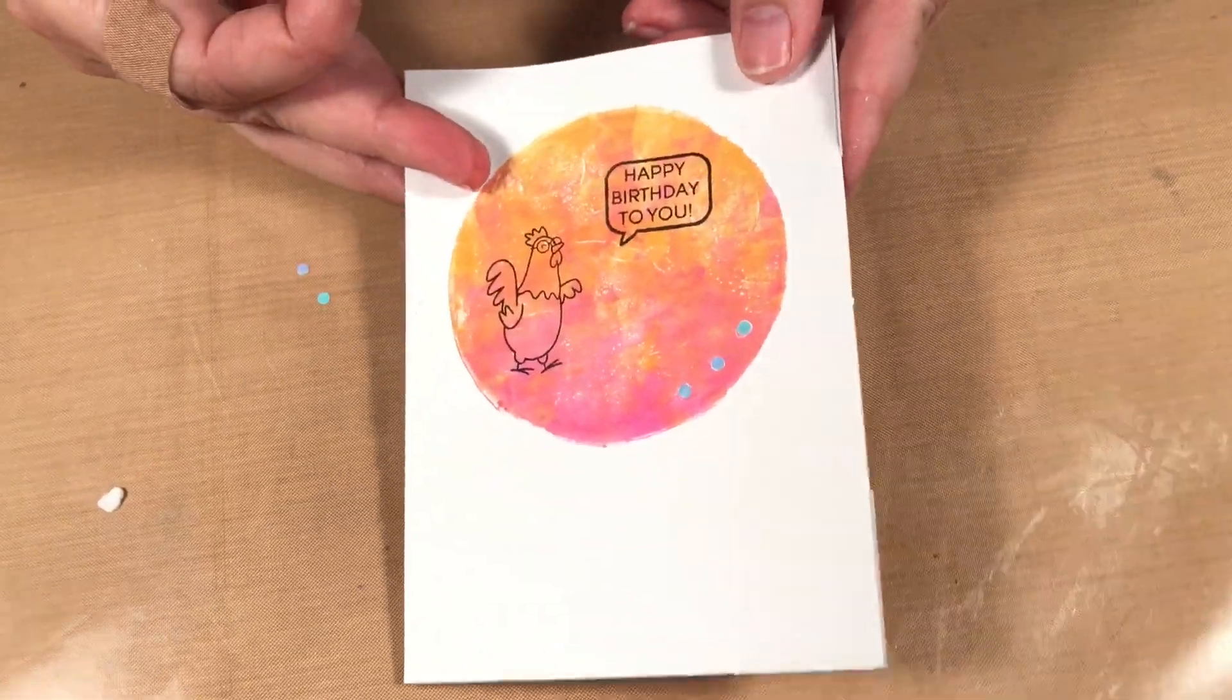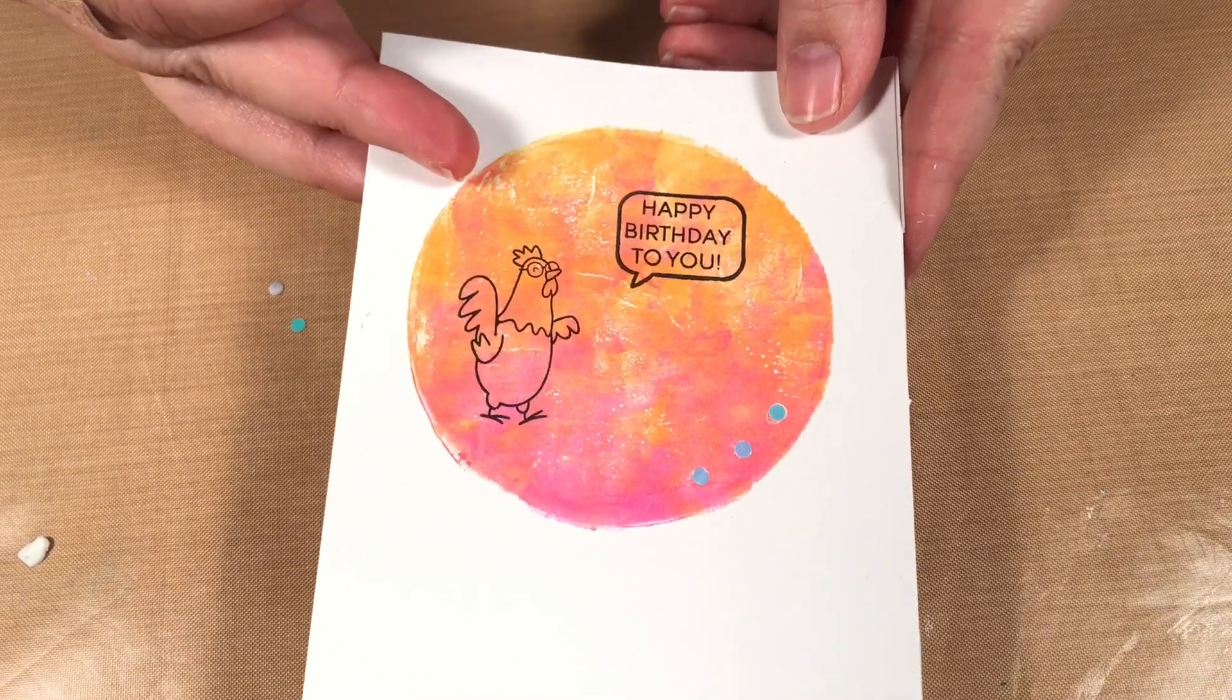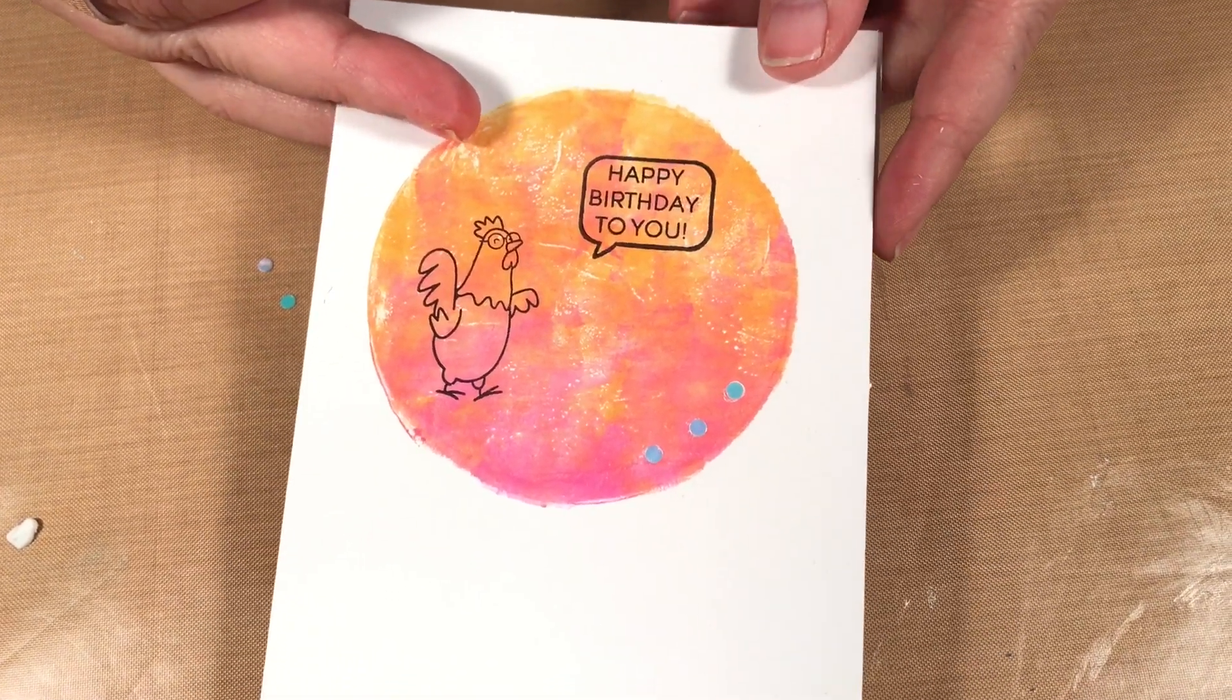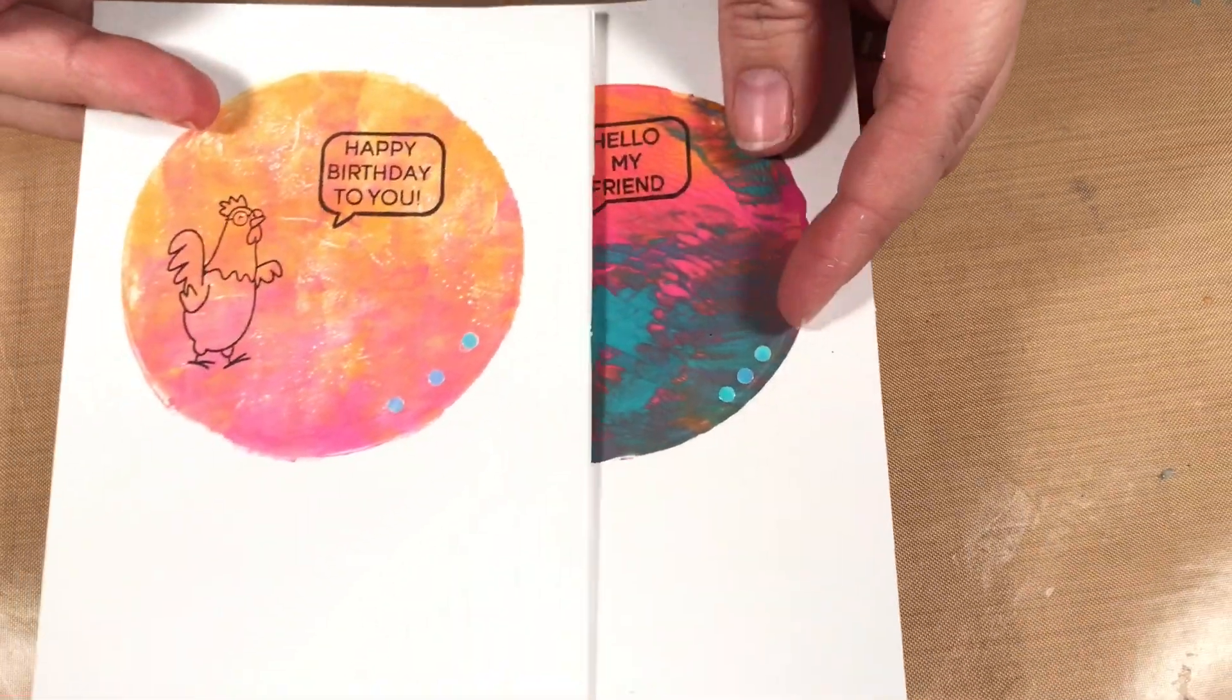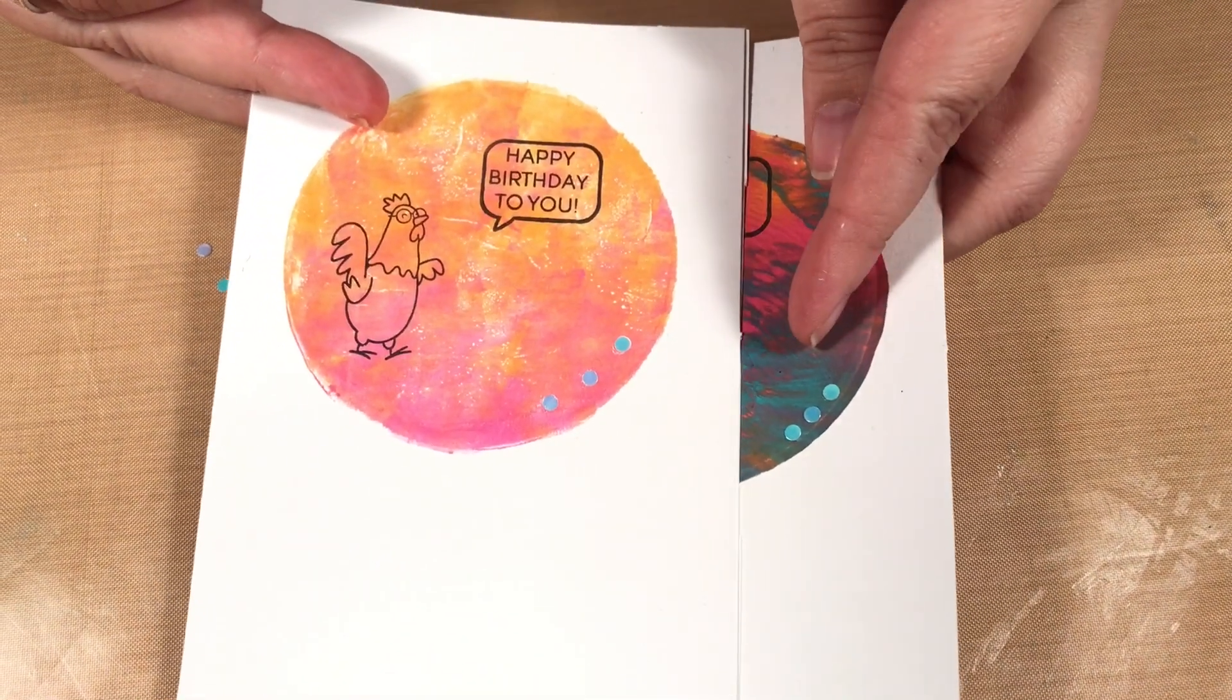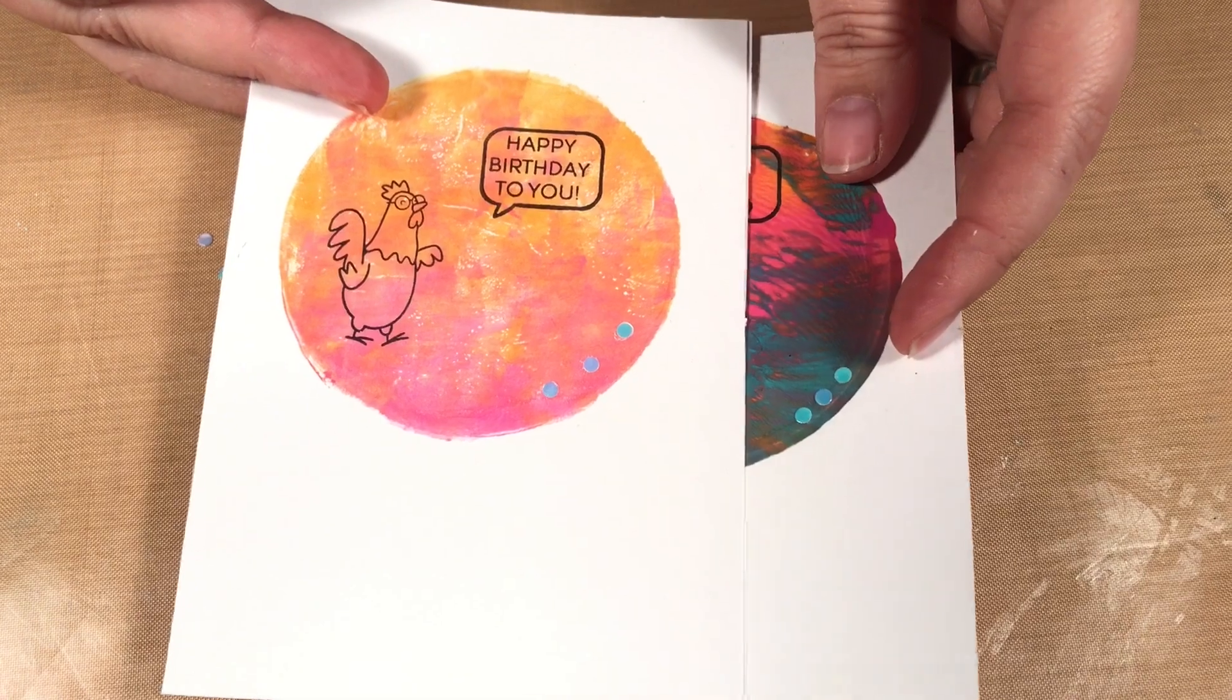The glue dries clear but I like to just take a bit of that excess off with the back. And so there I have my completed card. You should be able to see the circles there. If you had a different color that might contrast more. When I did the blue I did them closer together and it contrasted a little more.